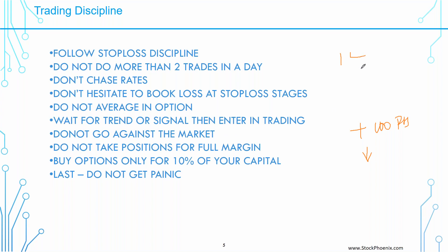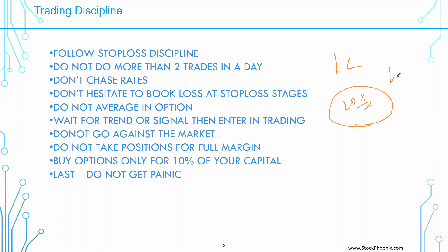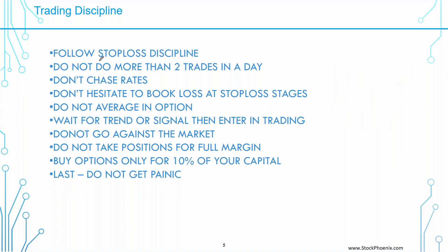If your stop loss escapes 10 times, the 11th time it will take back all the profit from the previous 10 trades, leading to big demotivation. Do not take positions for full margin — if you have one lakh rupees, take positions only for 75,000 and keep free margin for good trades. Buy options only for 10% of your capital; if your capital is one lakh, invest a maximum of 10,000 in options. Do not get panic — when the market is abnormal, book losses at stop-loss stages, exit the position, and don't take revenge on the market trying to recover money on the same day.